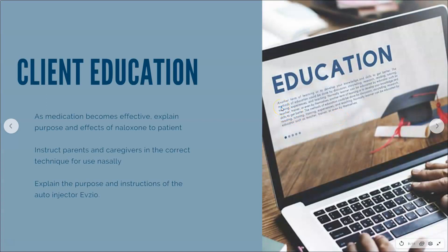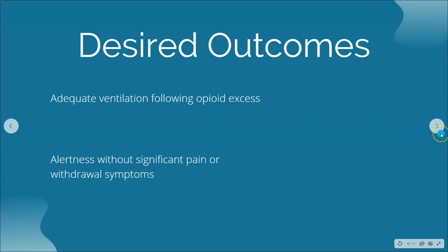For client education, as medication becomes effective, explain the purpose and effect of naloxone to the patient. Instruct parents and caregivers on the correct technique for using naloxone nasally, and also explain the purpose and instructions of the auto-injector. The desired outcomes for this drug include adequate ventilation following opioid exposure, and alertness without significant pain or withdrawal symptoms.